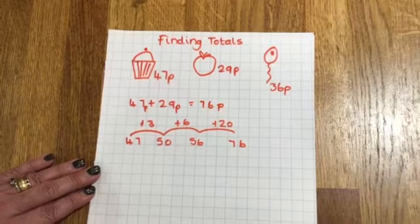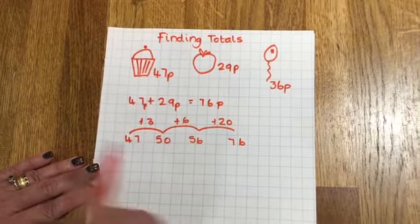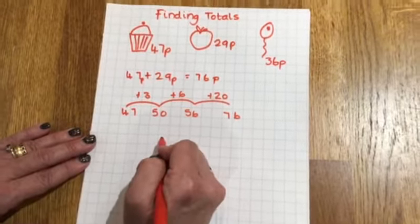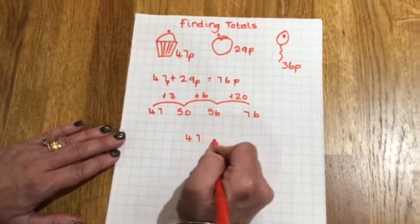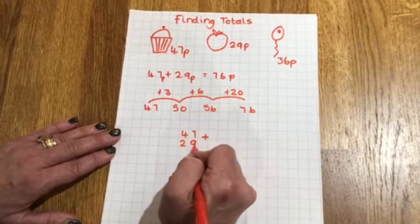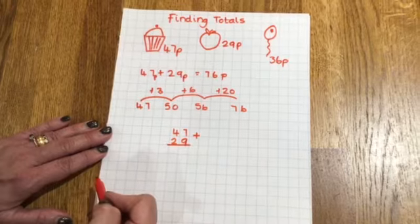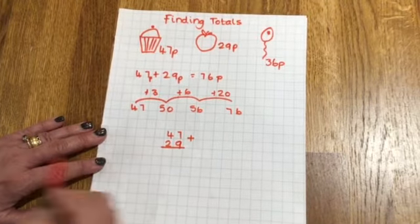Now the other way I could do it is to use column addition. So let's have a look at that. So 47 add 29. This could be a little bit tricky.